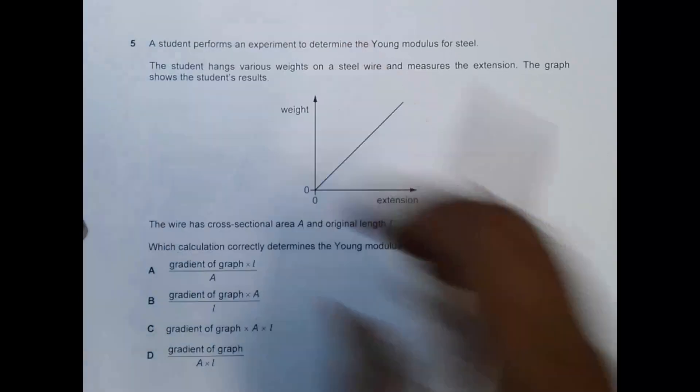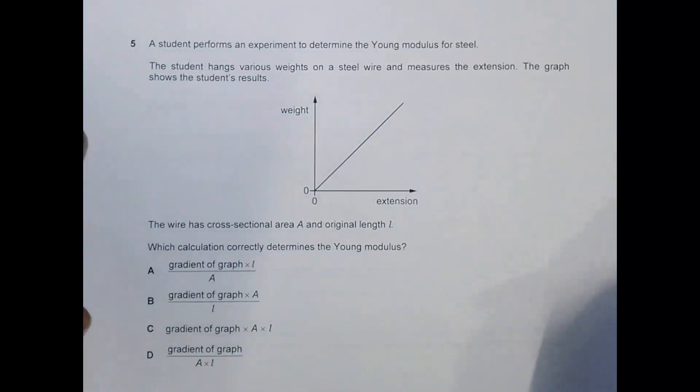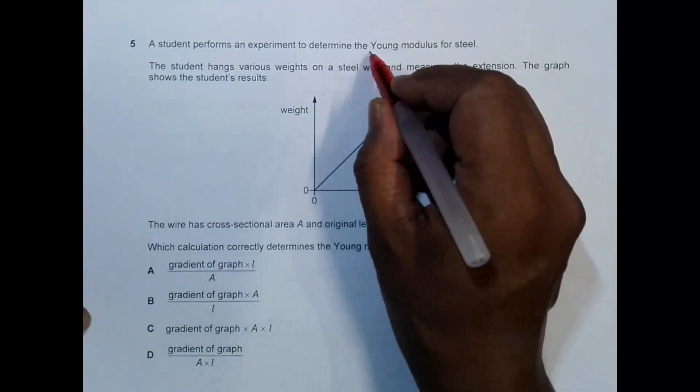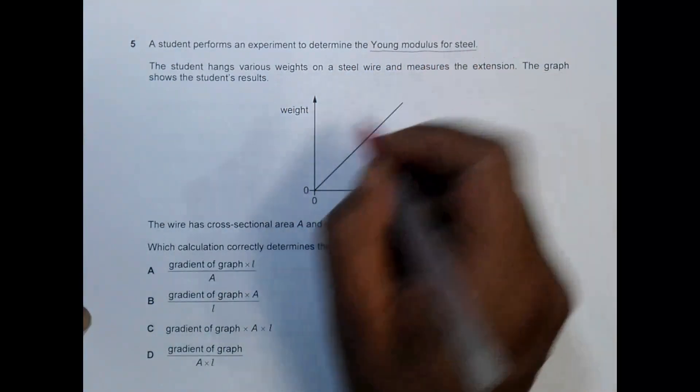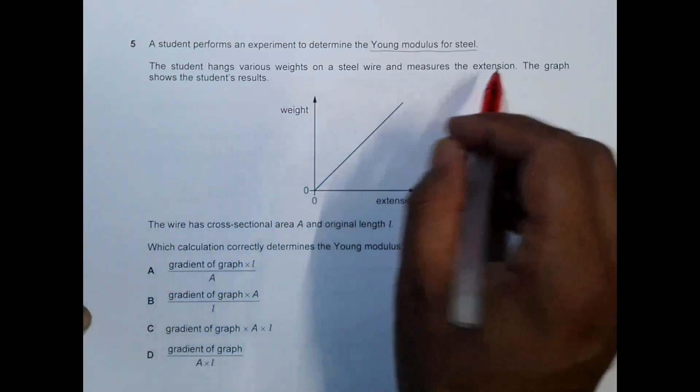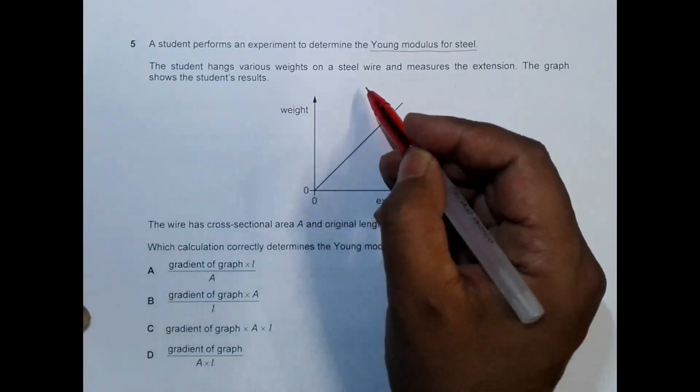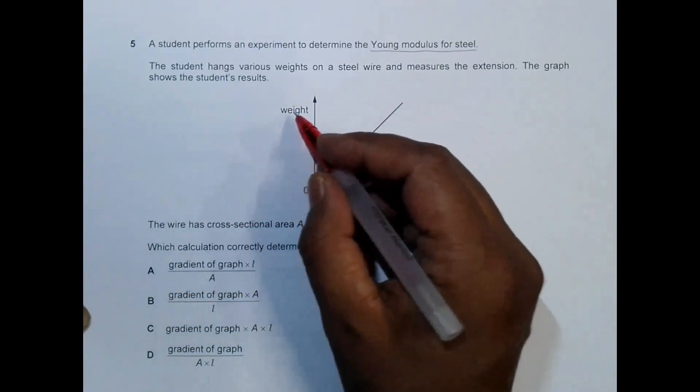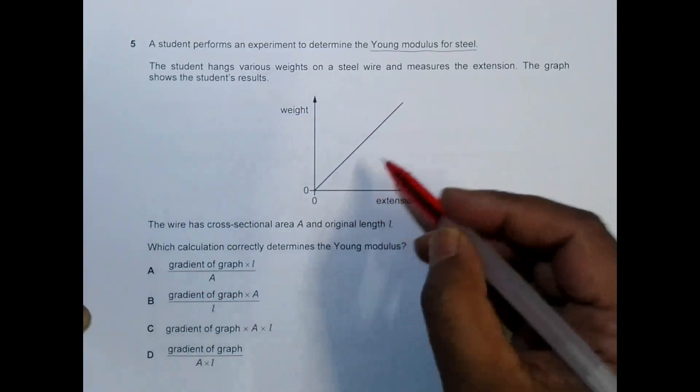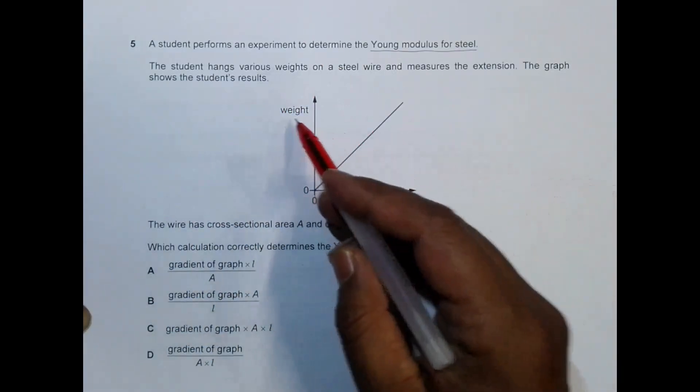It says that a student performs an experiment to determine the Young's modulus for steel. The student hangs various weights on a steel wire and measures the extension. Here, the deforming force is provided by the weight. The graph shows the student's results.